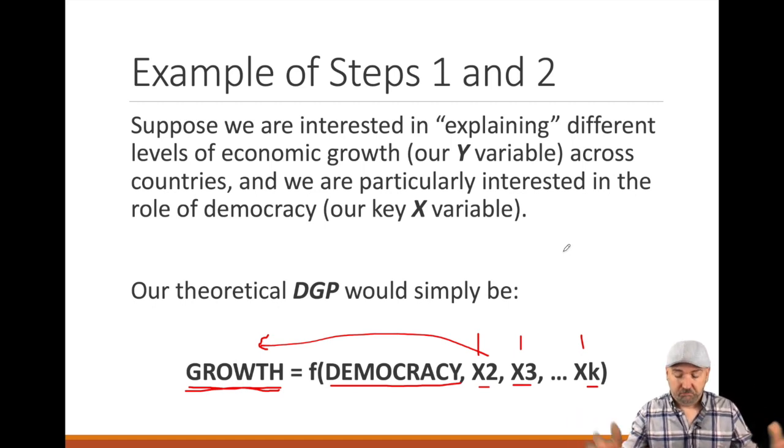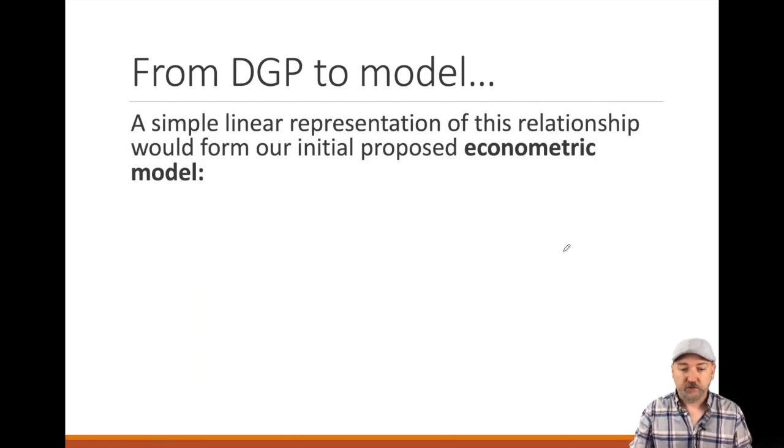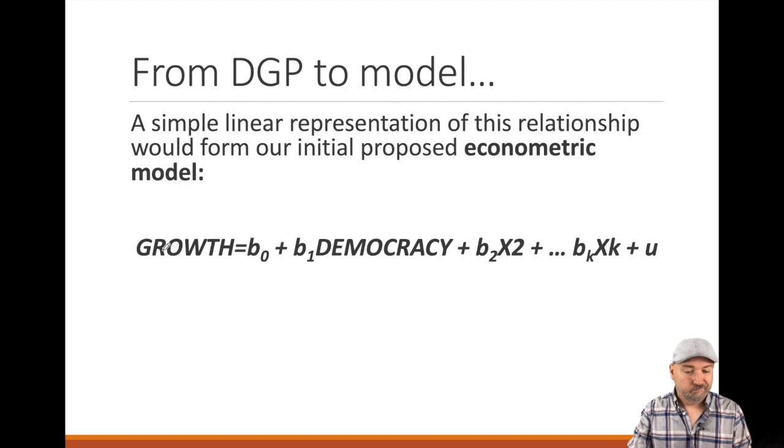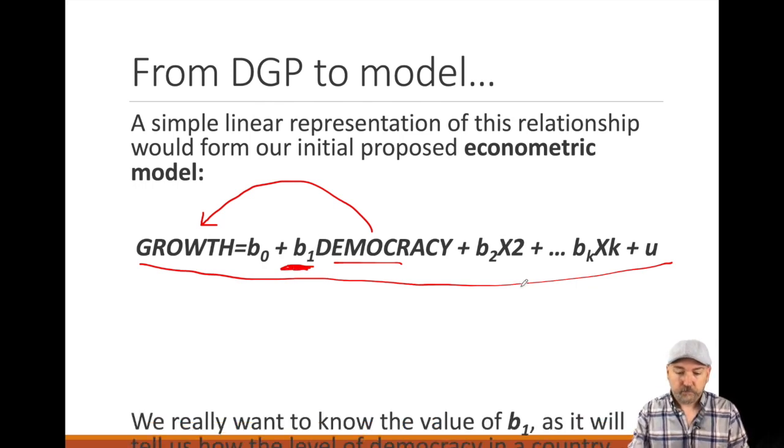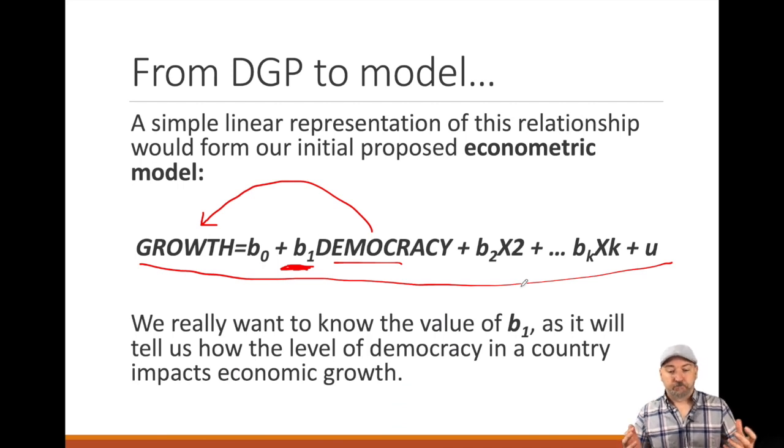Basically, instantaneously, when we see that chapter heading and we say, that's a good question, we formulate in our mind this possible data generation process. We might have some specific ideas of what these other x variables might be as well, but that's going to be a good start. That's step number one, simply taking a question and turning it into a possible data generation process. And then step number two is, for our simple purposes, just constructing a linearization of that relationship. If democracy is our key variable, that's our x1 variable, we want to know what that B1 term is. When democracy increases, does that make a country likely to grow faster or slower, or does it have no effect at all? We need to know what that B1 is to answer that question.